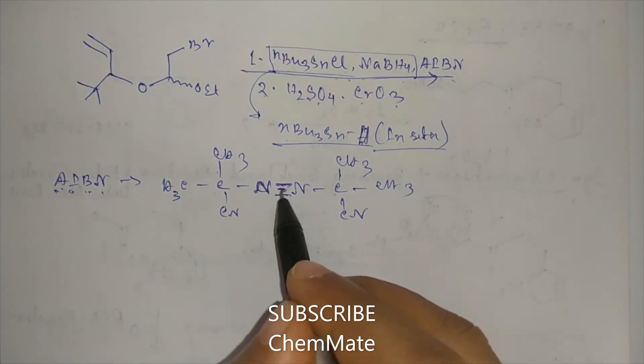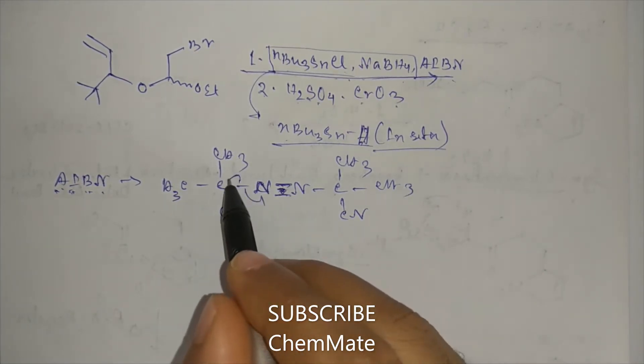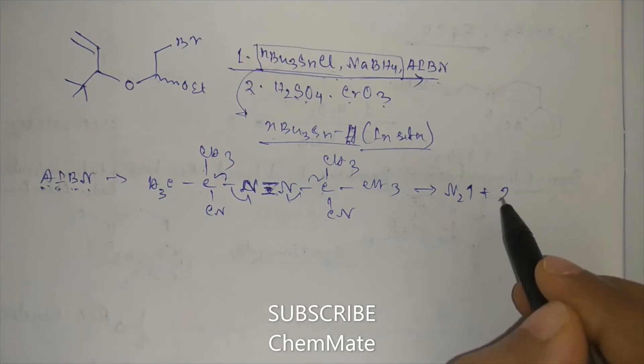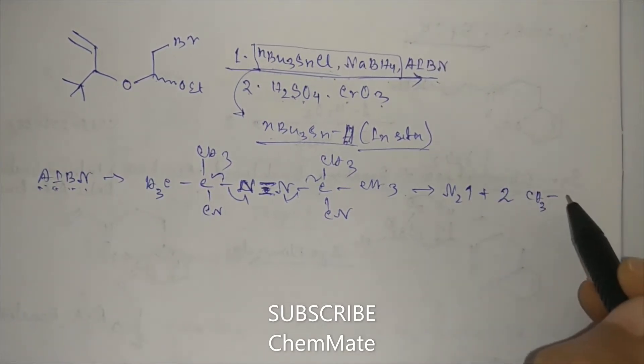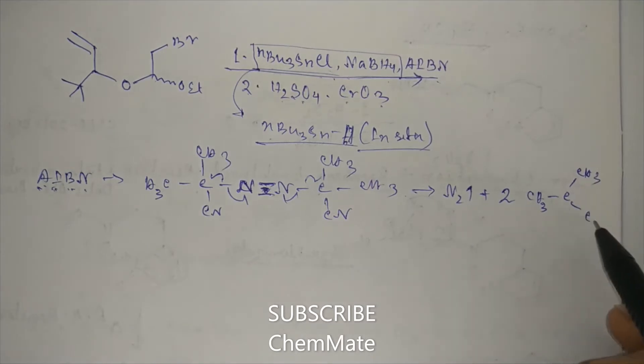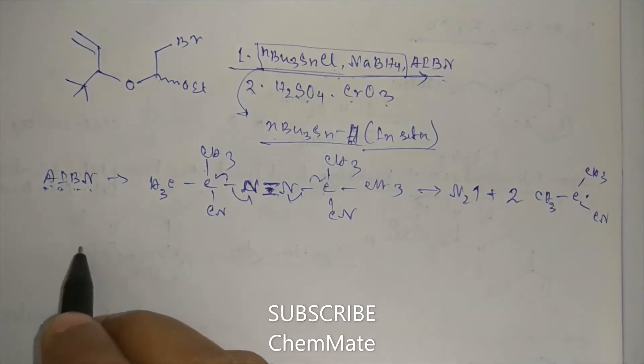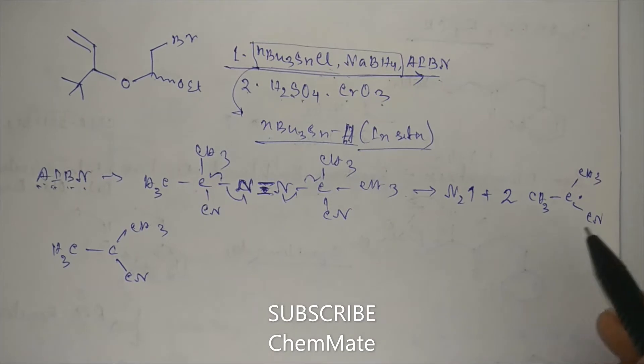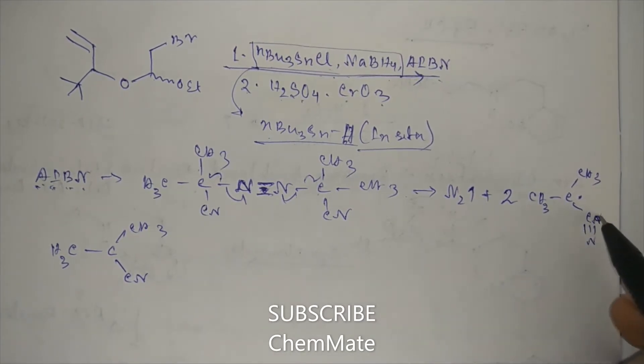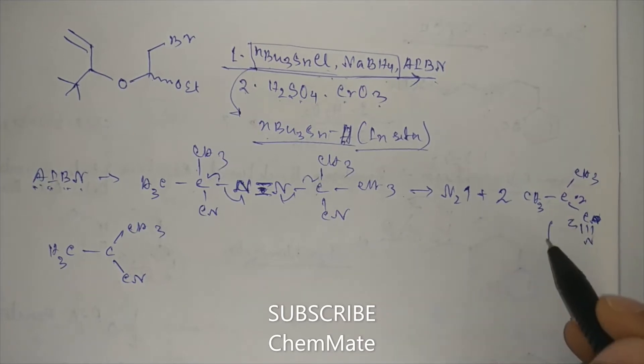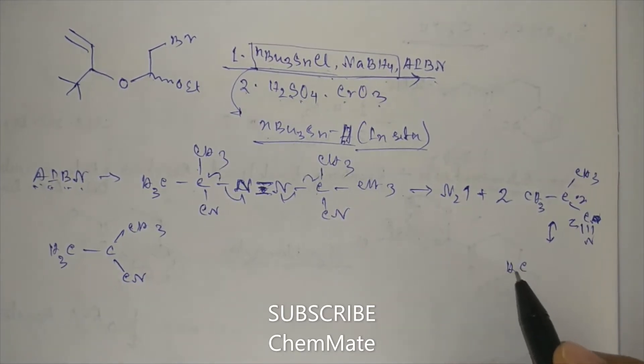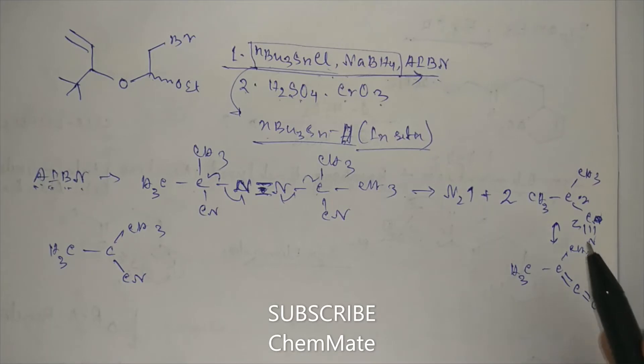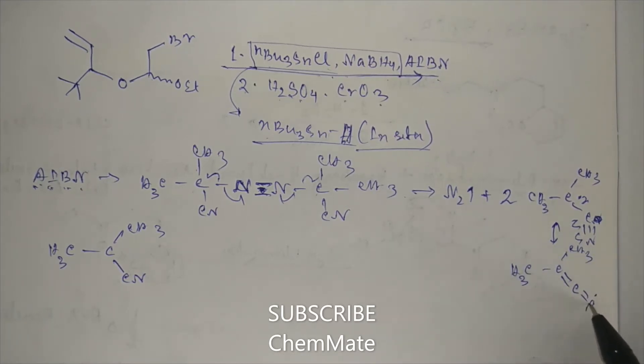There is a double bond here. This bond will cleave homolytically to produce N2 gas plus two isobutyronitrile radicals. Now this radical is a stable radical because here this carbon radical can come into resonance with this cyanide group. So it is a stable radical.